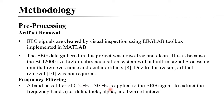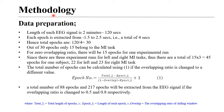For frequency filtering, a bandpass filter of 0.5 to 30 Hz was applied. The length of the EEG signal is two minutes, equal to 120 seconds. Each epoch is extracted from -1.5 to 2.5 seconds, making it four seconds long, yielding 30 epochs total. There are 15 epochs for motor imagery tasks, and with three experimental runs, we have 45 tasks — 22 for left hand and 23 for right hand.